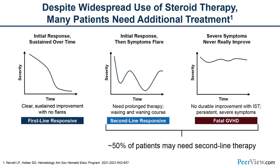This slide shows the variability in what we see clinically when patients start steroids. First, a patient who is responsive to treatment — symptoms go down and follow a nice resolution. In the middle is a more variable clinical course where a patient initially responds, then may flare or lose response, fluctuating over a number of months. And most concerning is a situation where patients are not responding to steroids or therapy at all, and multiple treatments may be needed.